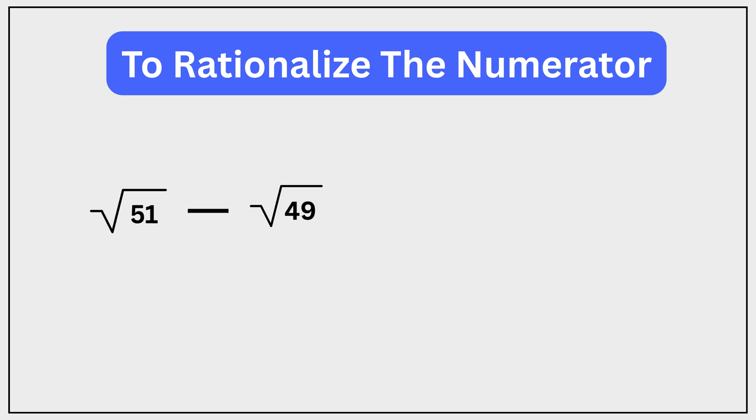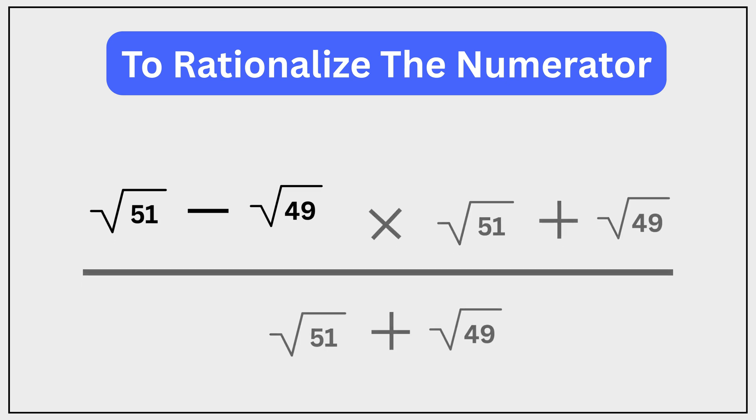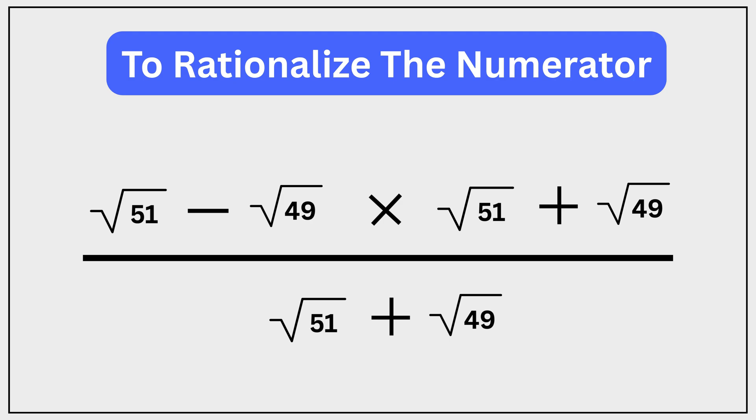To rationalize the numerator, we will multiply both the numerator and denominator by √51 + √49. This way, instead of a subtraction in the numerator, we'll have a multiplication of a conjugate pair.